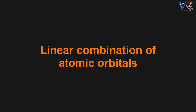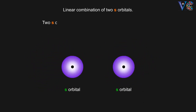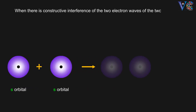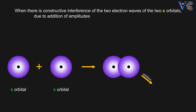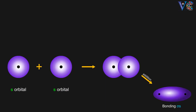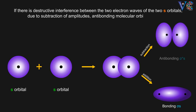Linear Combination of Atomic Orbitals — Linear Combination of Two S-Orbitals. Two S-orbitals can combine to give two molecular orbitals. When there is constructive interference of the two electron waves due to addition of amplitudes, a bonding molecular orbital is formed. If there is destructive interference due to subtraction of amplitudes, an antibonding molecular orbital is formed.